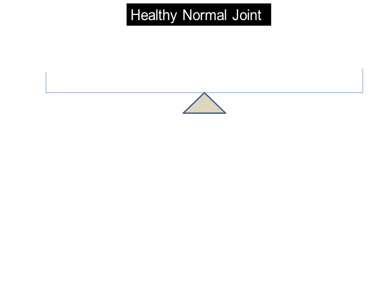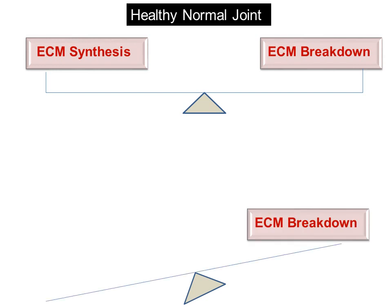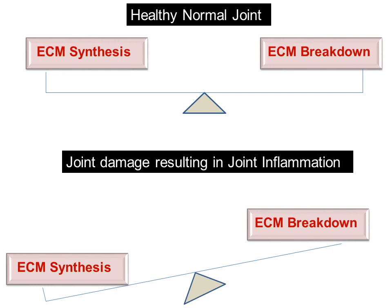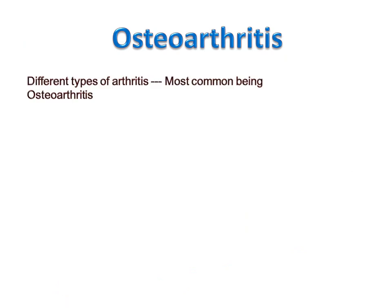In a healthy, normal joint, a delicate balance exists between cartilage ECM synthesis and ECM breakdown. If this balance is disrupted — if ECM breakdown is increased and synthesis of ECM is reduced — the net result is joint damage resulting in joint inflammation. When there is inflammation of the joint, this is known as arthritis. Arthritis is inflammation of the joint: 'arthros' meaning joint and the suffix '-itis' denoting inflammation. There are different types of arthritis, the most common being osteoarthritis.